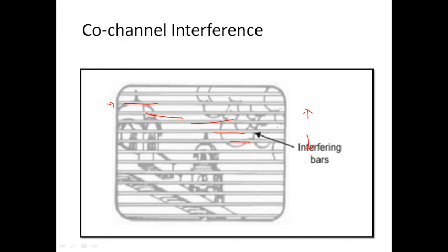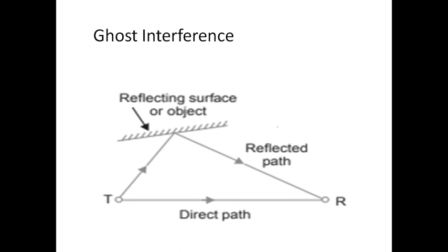The second type of interference is adjacent channel interference. Stations located close by occupying adjacent channels present a different interference problem. It may occur as a result of a beat between any two of these frequencies, or between a carrier and a sideband. A coarse dot structure is produced on the screen if the picture signal of the desired channel beats with the sound carrier of the lower adjacent channel.